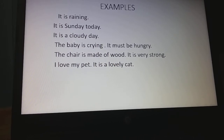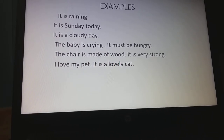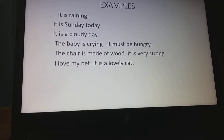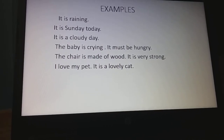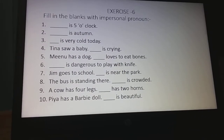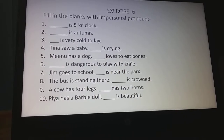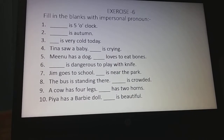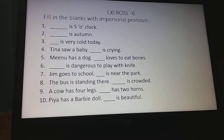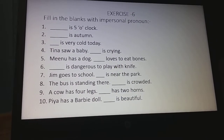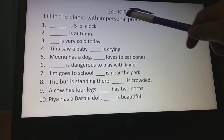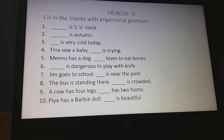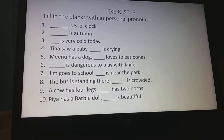So 'it' is used for time, weather, young child, non-living things, and animals. Now take out your English language copy and write Exercise 6. Exercise 6 is the exercise of pronouns. Fill in the blanks with the impersonal pronoun. It is very easy — you will only fill in the blanks with 'it' as the impersonal pronoun.